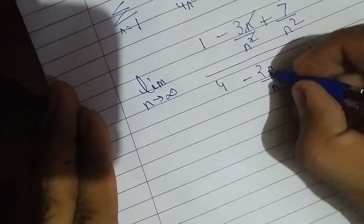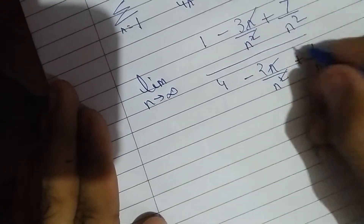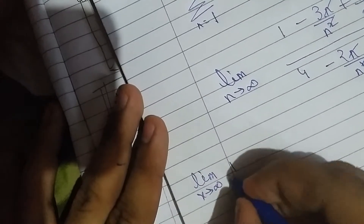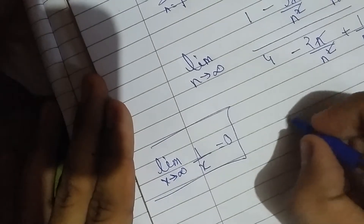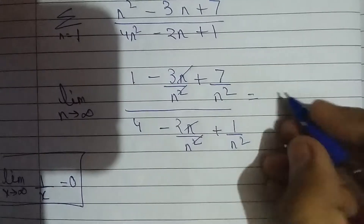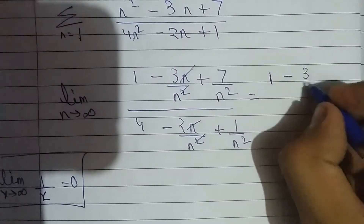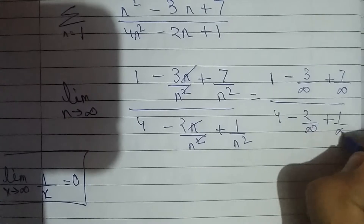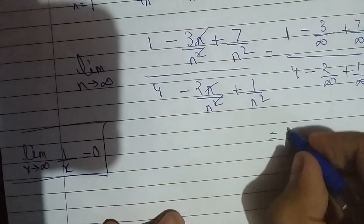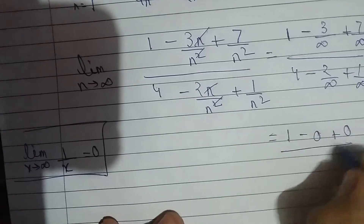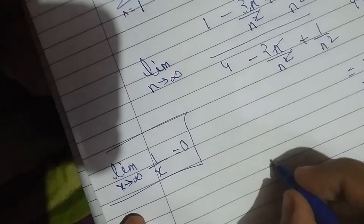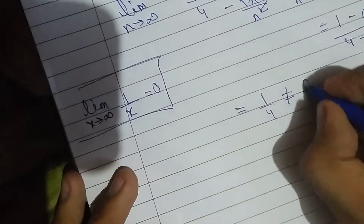Here we can cancel n. As the limit as n tends to infinity, we know that 1/x tends to 0. So substituting values, we get 1 minus 3/∞ plus 7/∞ over 4 minus 2/∞ plus 1/∞. Since 3/∞, 7/∞, 2/∞, and 1/∞ are all 0, we get the value 1/4, which is not equal to 0.